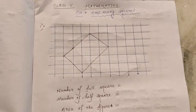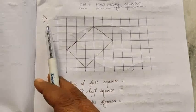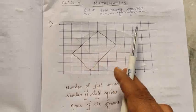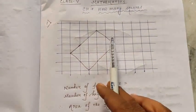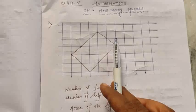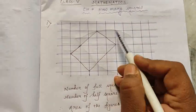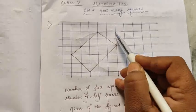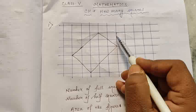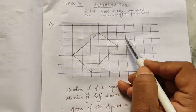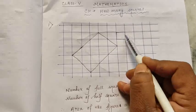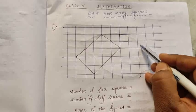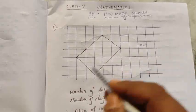Here in the first case, I have taken a shape on square paper. Each square is one centimeter by one centimeter — since it is a square, all four sides are equal — so one into one, meaning each square has an area of one centimeter square.